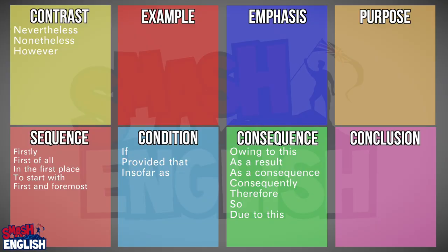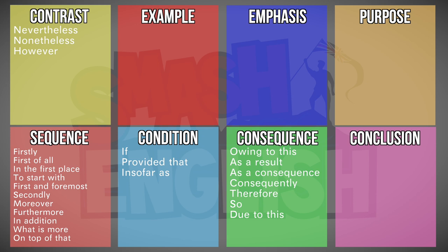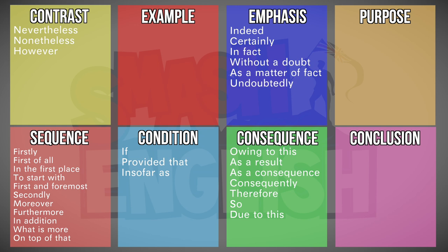So for additions we have 'moreover', 'furthermore', 'in addition', 'what is more' and 'on top of that'. For emphasis we have 'indeed', 'certainly', 'in fact', 'without a doubt', 'as a matter of fact' and 'undoubtedly'. And for consequence we have added 'in light of this'.